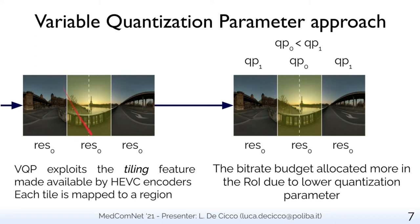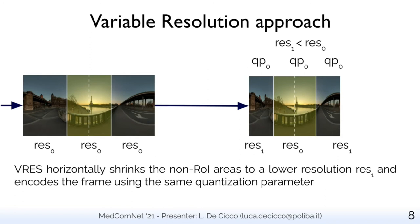Let's start with the variable quantization parameter approach. The ERP projected raw video is divided into three vertical strips, each with the same resolution RES0, with the central one being the ROI. Exploiting the tiling feature made available by HEVC encoders, it is possible to map each of these three regions to a tile encoded at different quantization parameters. The VQP approach assigns a lower quantization parameter QP0 to the ROI area and a higher one QP1 to the non-ROI areas, so that the bitrate budget distributes more quality to the ROI. The disadvantage is that it must employ HEVC tiling, which is not available in all encoders — so the VQP approach is not codec agnostic.